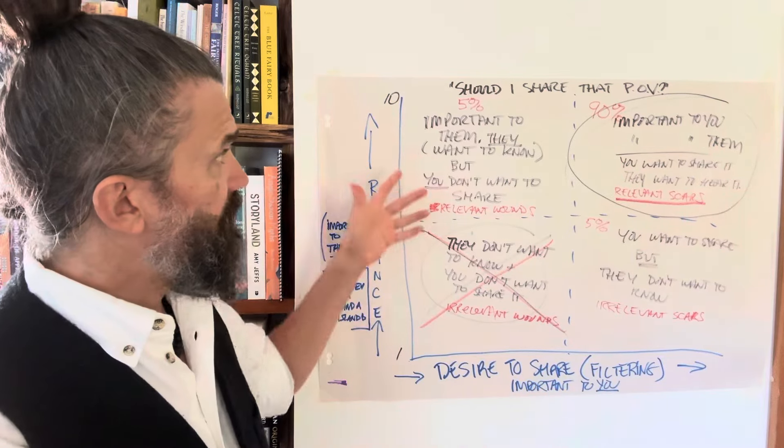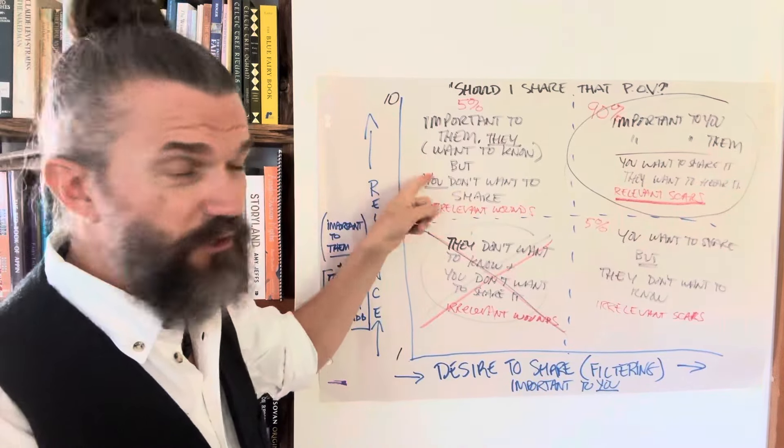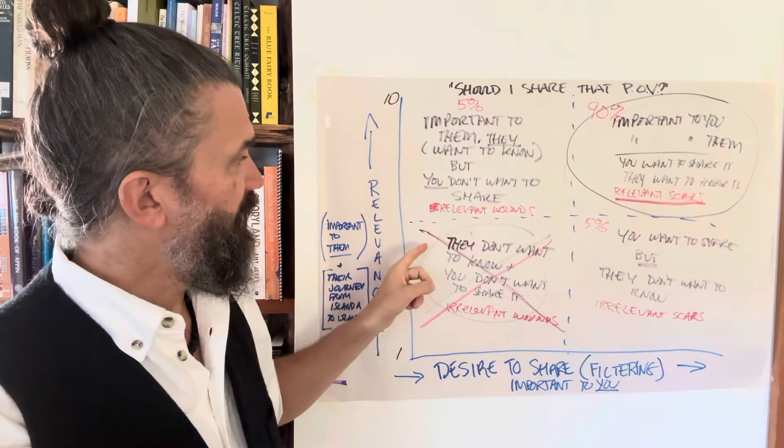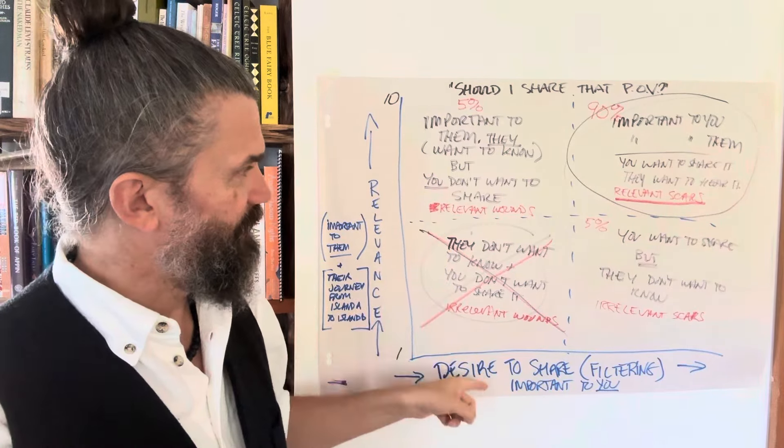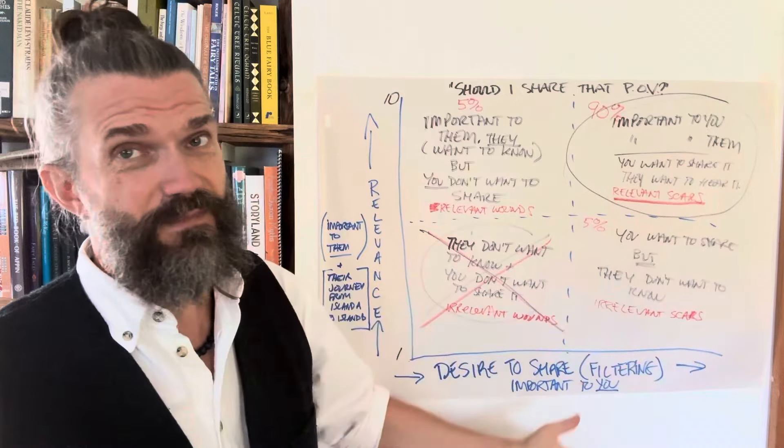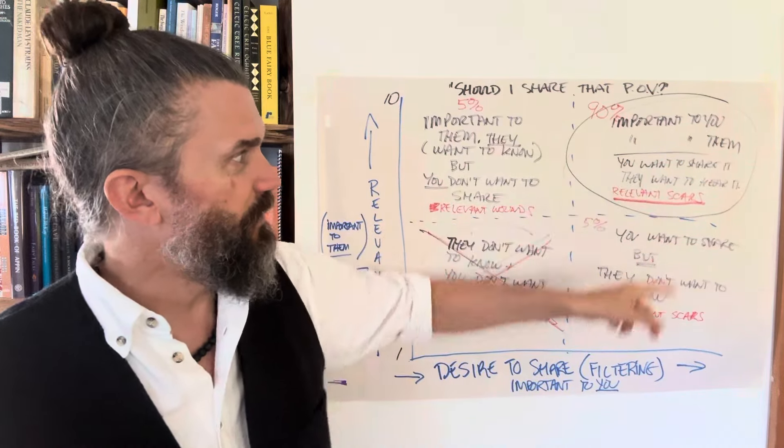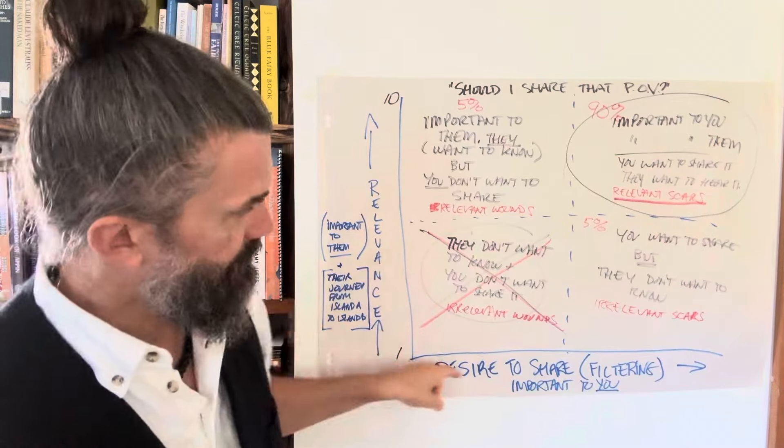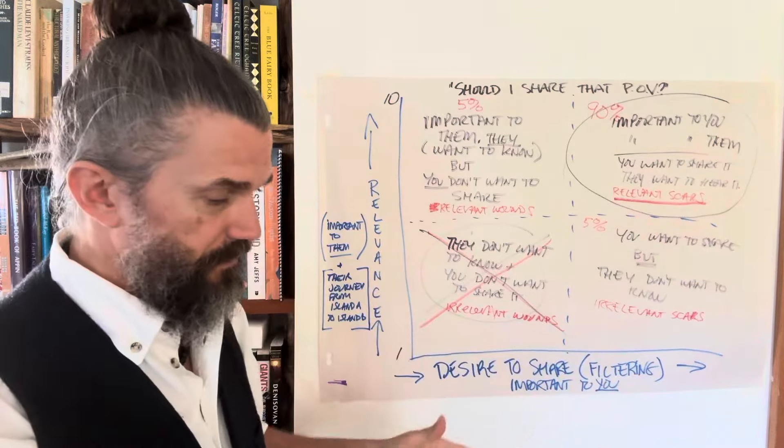So again, we've got this quadrant here where they want to know one of your thoughts, but you don't want to share. We've got they don't want to know it and you don't want to share it. You want to share it, but they don't really want to know. And of course you want to share it and they want to hear it. Important to them, important to you.